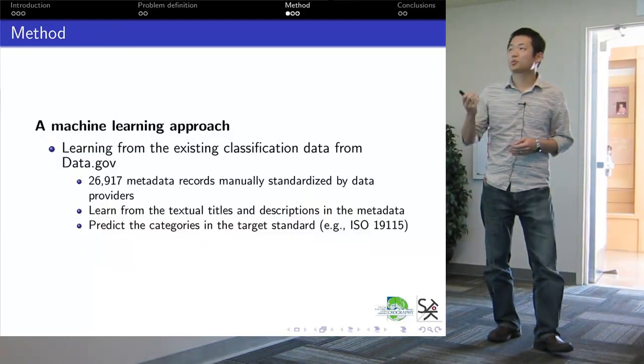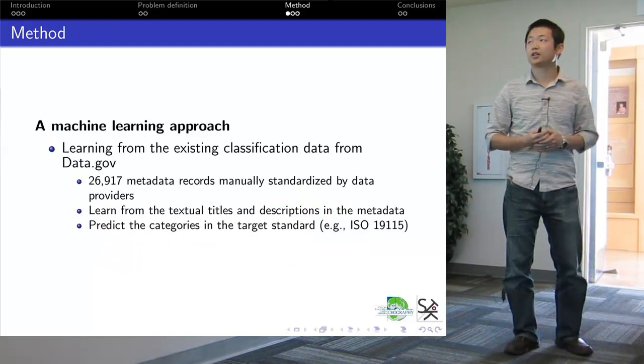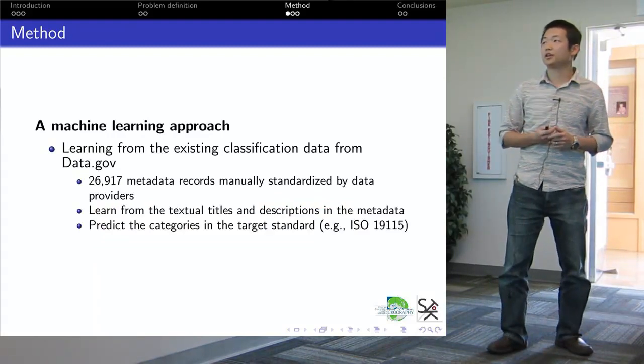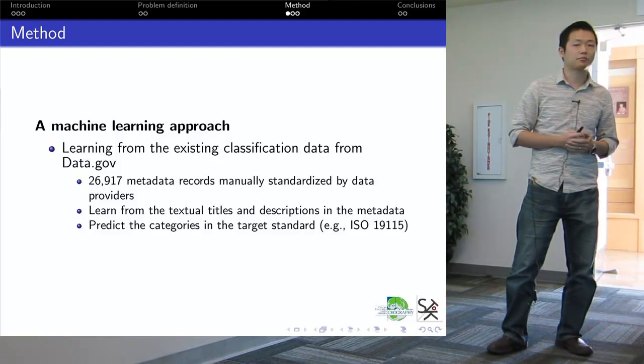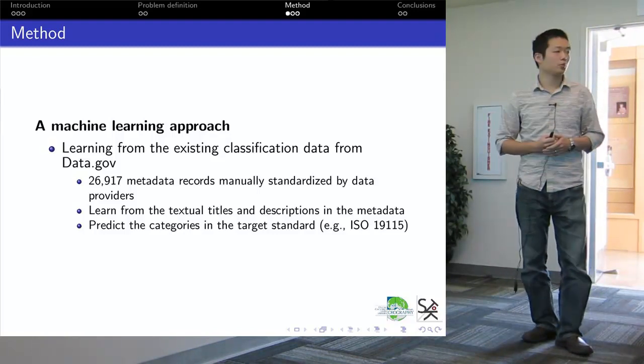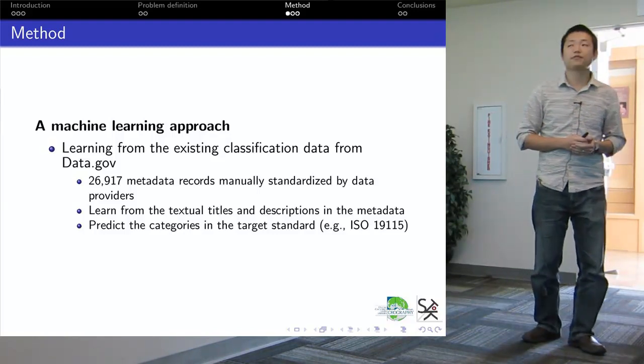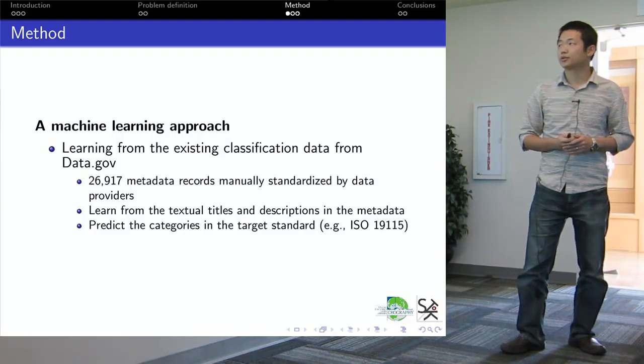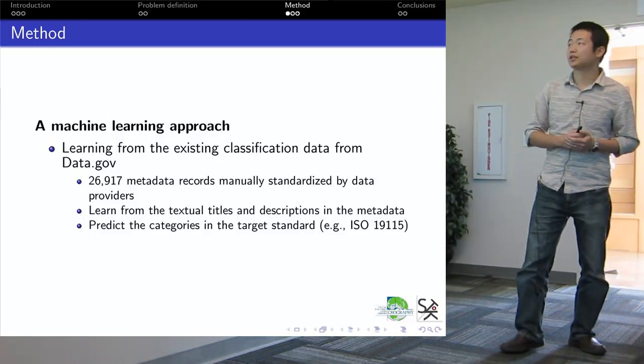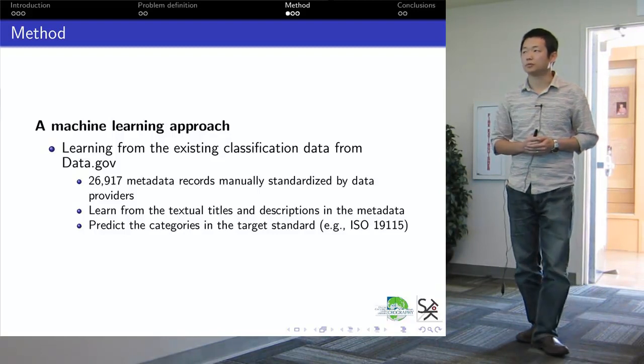In this work, we propose using a machine learning approach. We learn from existing classification data from Data.gov. In total, we have retrieved more than 25,000 metadata records which are manually standardized by data providers from Data.gov.